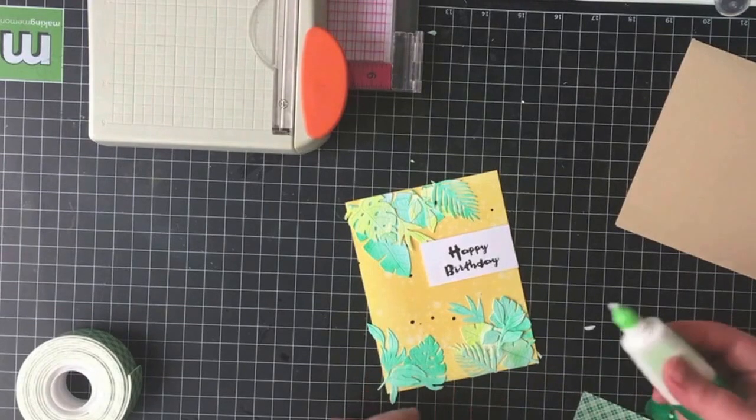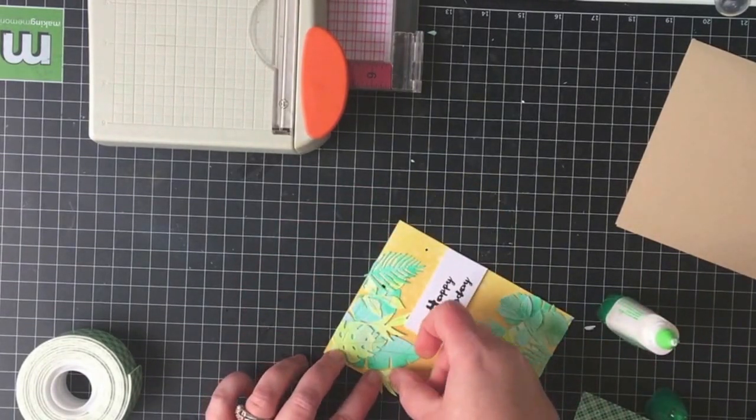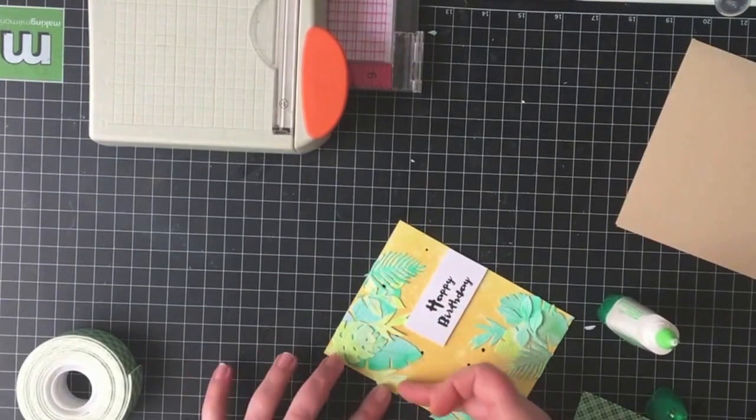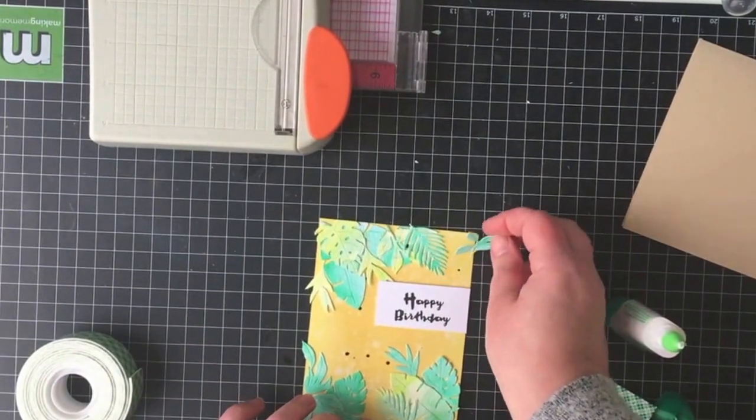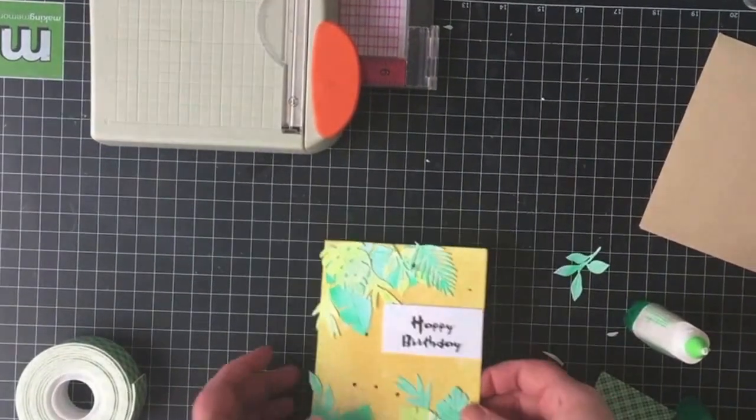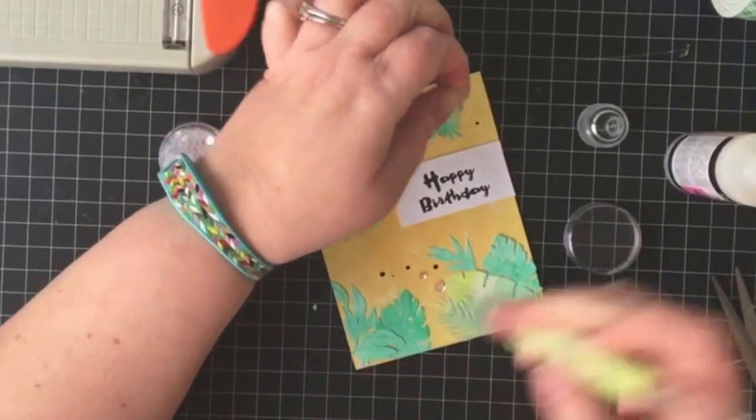Now I'm just adding a couple more of the leaves that I had die cut earlier from the watercolor panel and just making sure that all of that is adhered down and I will trim off the leaves that are hanging from the edges so that everything is flush with the card.